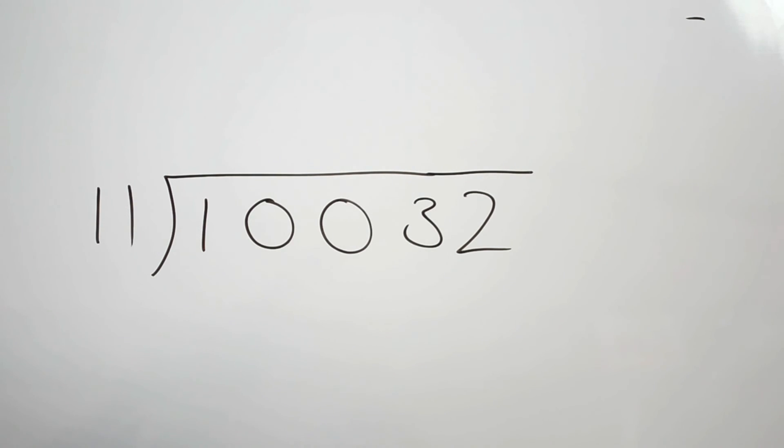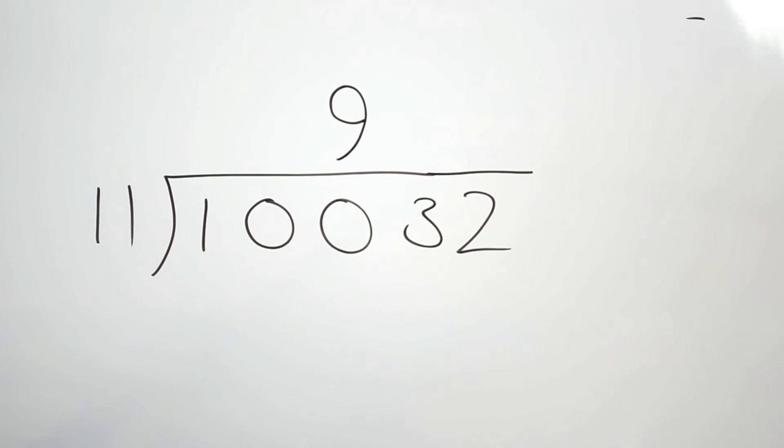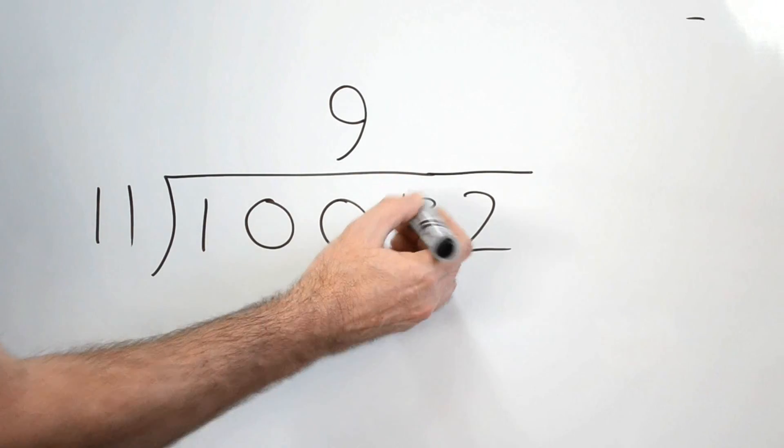99. Good. So we know that 11 times 9 is 99. So we can put our 9 there. Now, if we take 99 away from 100, we're left with one. That's our remainder, and that pops there.